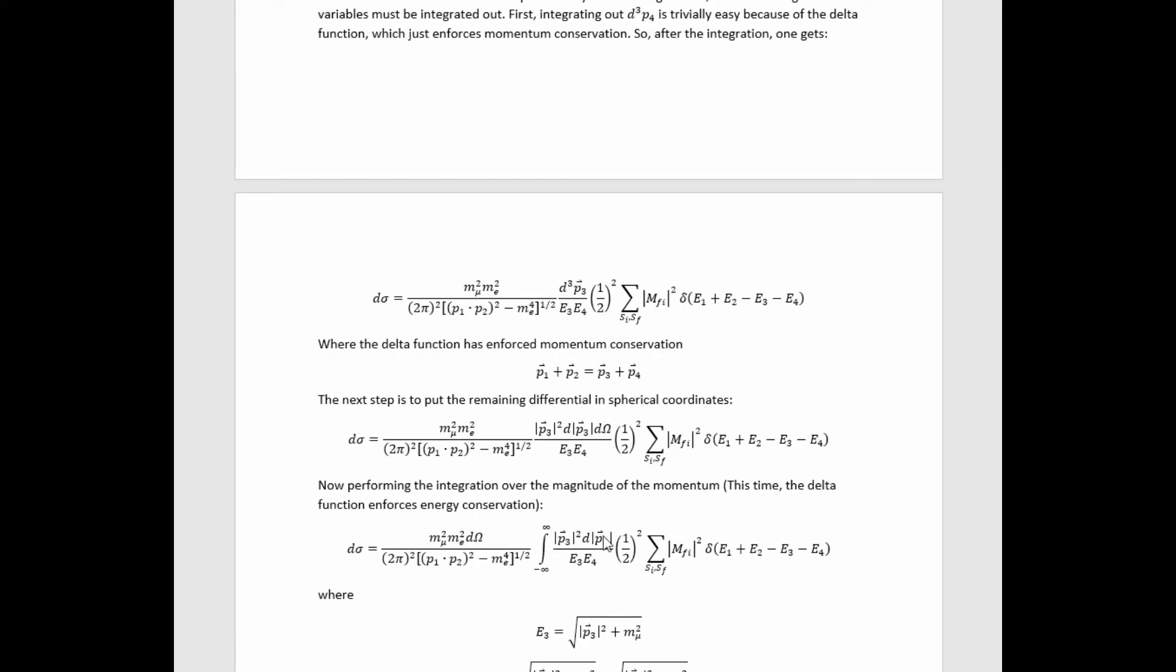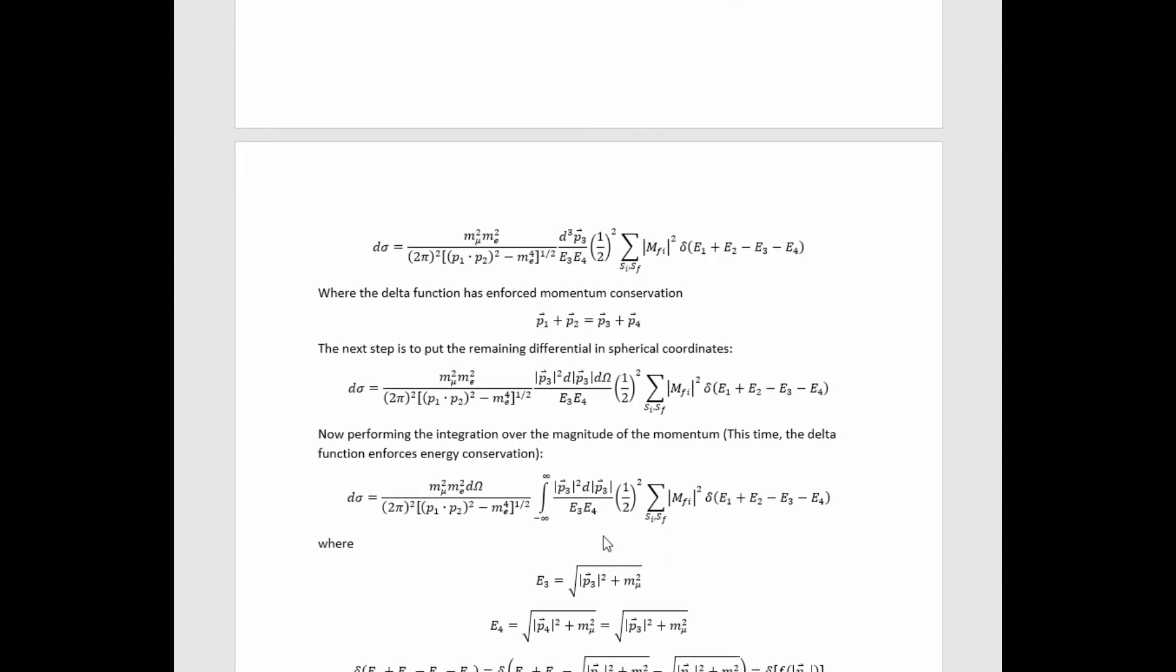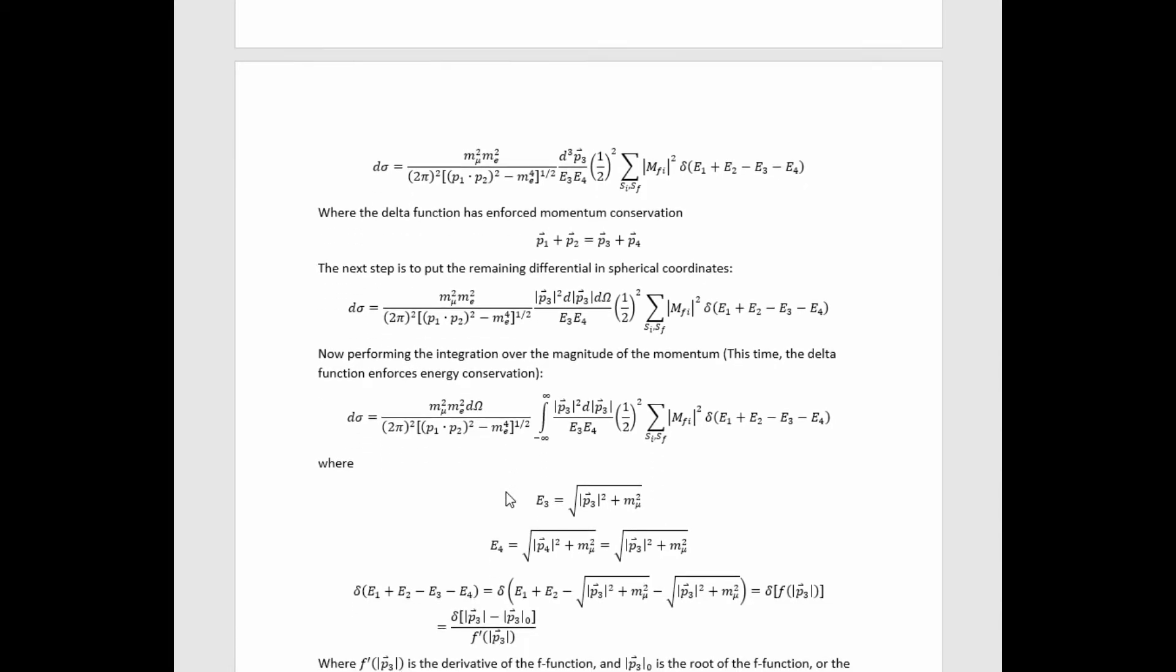And then we'll be free to do this integration and we'll get the differential scattering cross-section general formula in terms of the square of the Feynman amplitude with respect to the solid angle differential of the outgoing muon.